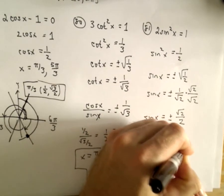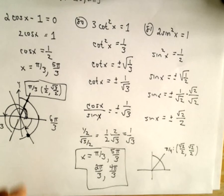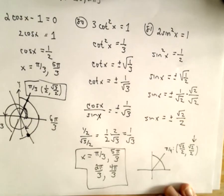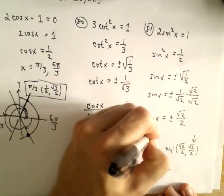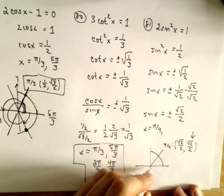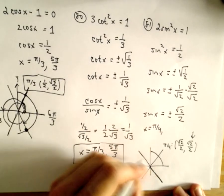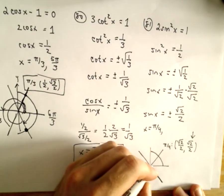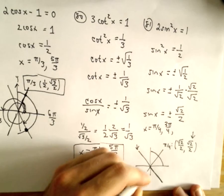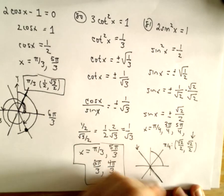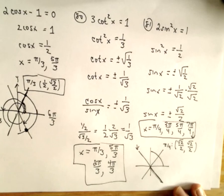That leaves us with square root of 2 over 2. At the angle pi over 4 on the unit circle, both the x-coordinate and the y-coordinate equal square root of 2 over 2. Since sine represents the y-coordinate, one solution is pi over 4. The other positive solution is in the fourth quadrant. For negative solutions, we can be in the second or third quadrant. So our four solutions are pi over 4, 3 pi over 4, 5 pi over 4, and 7 pi over 4.